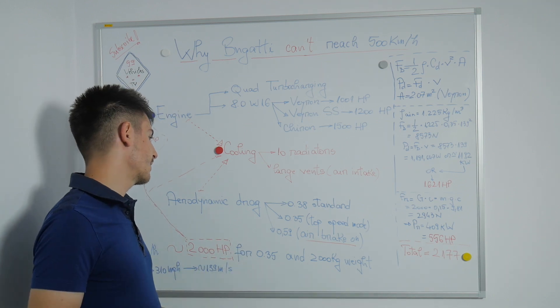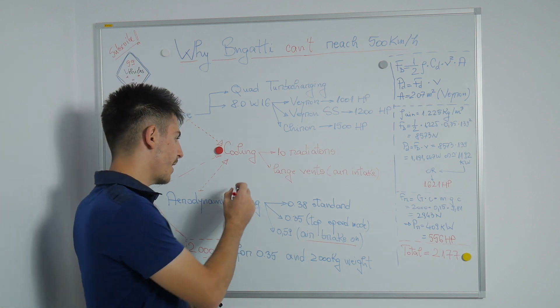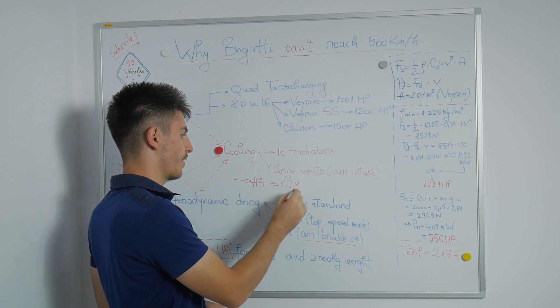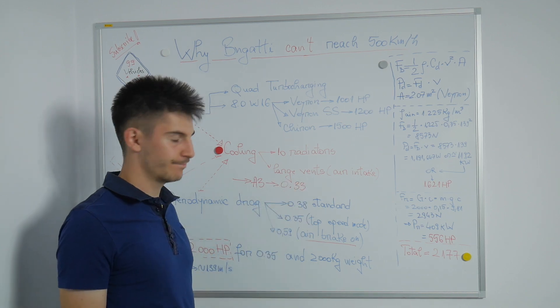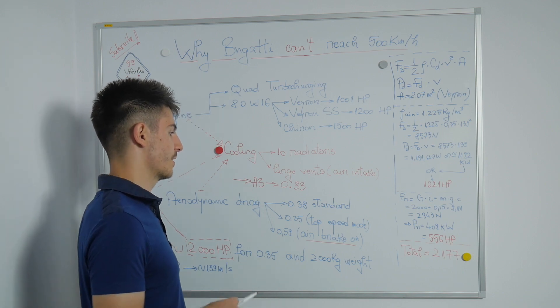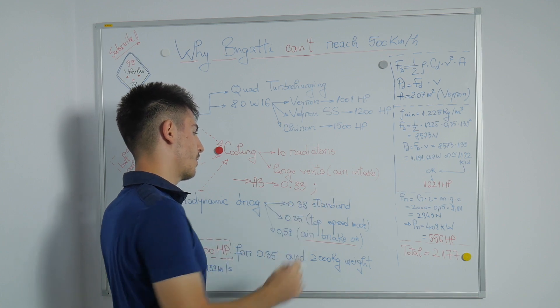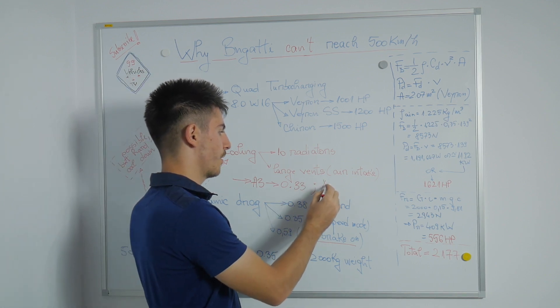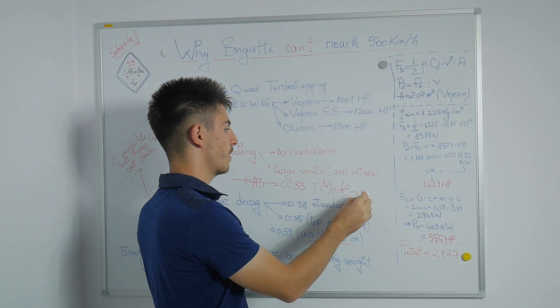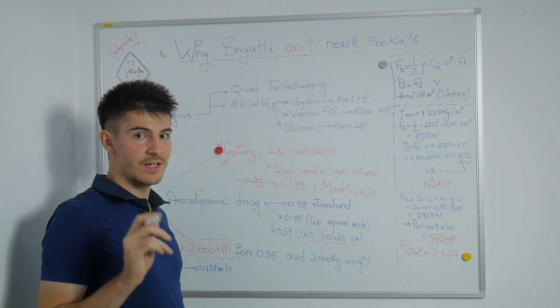If you think these aerodynamic drag coefficients are great, well they're not. My Audi from 2004 has a drag coefficient of 0.33, which is a little bit less than the Chiron in its top speed mode. Also, the latest model from Tesla, the Model 3, has a drag coefficient of 0.21, and that's because it doesn't have any air vents in the front of the car.